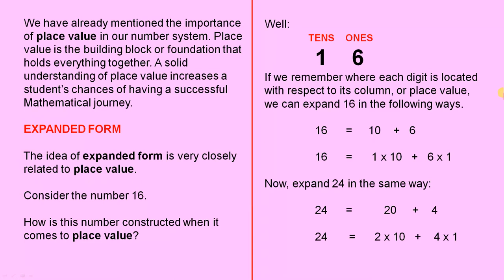Consider the number 16. How is this number constructed when it comes to place value? Well, we have one ten and six ones. So that's the ones column and that's the tens column. And these are the place values. So there's the six, which has a place value of six ones, and there's the one, which has a place value of one ten.